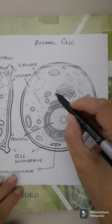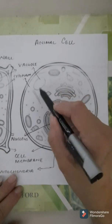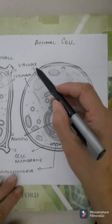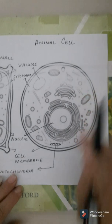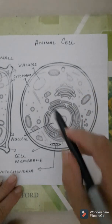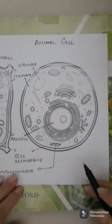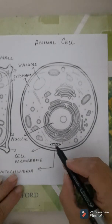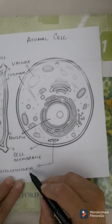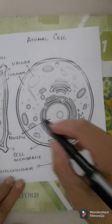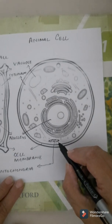Then we have small bag-like or bubble-like structures called vacuoles. Many vacuoles are present in the animal cell, storing food, water, etc. Then we have the mitochondria, known as the powerhouse of the cell.